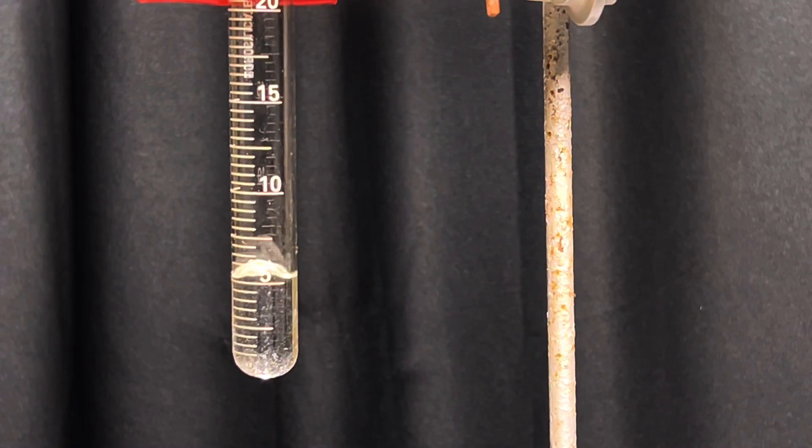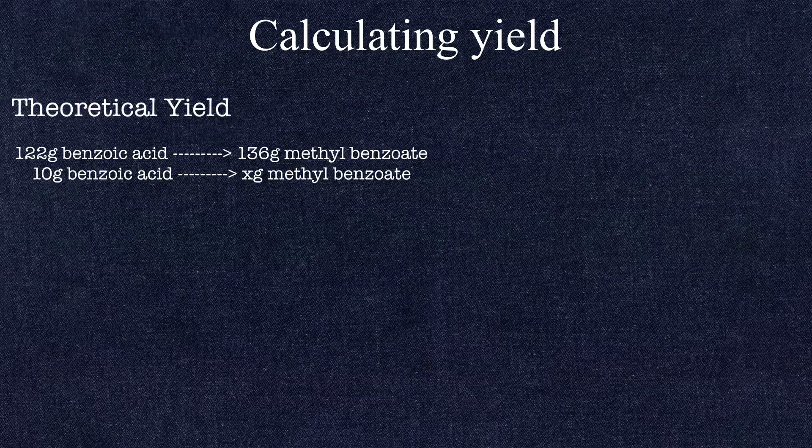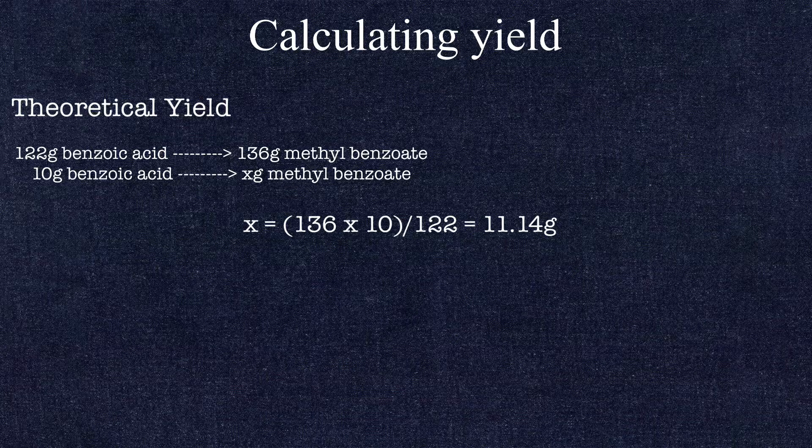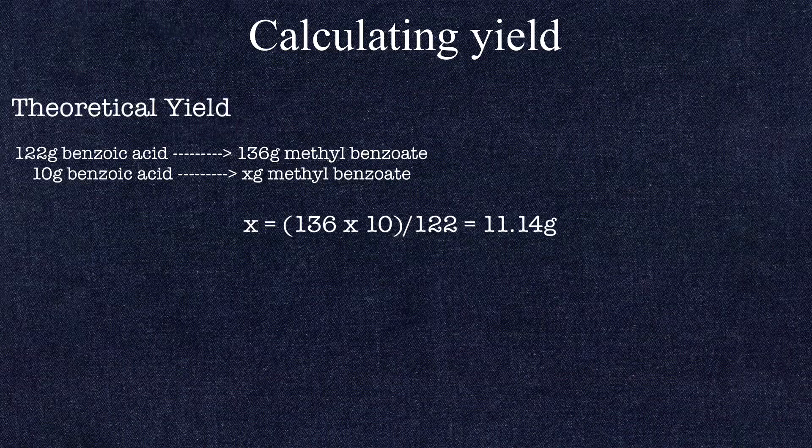Now for the calculation of the percentage yield. The limiting reagent is benzoic acid. One mole of benzoic acid should yield one mole of methyl benzoate, that is 122 grams of benzoic acid should yield 136 grams of methyl benzoate.